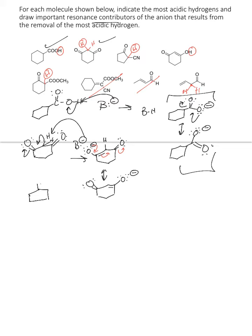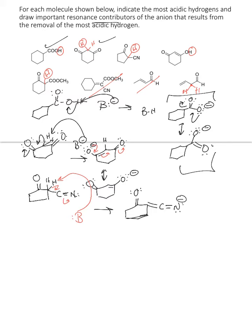For the third one, we have this ketone with two alpha hydrogens. The nitrile group is electron withdrawing, so this would make these pretty acidic. You can go one way with our electrons, or we could also go up and put your electrons on the oxygen.